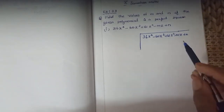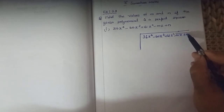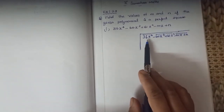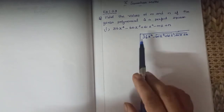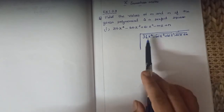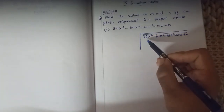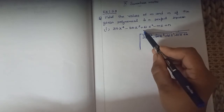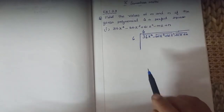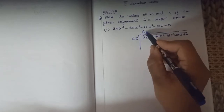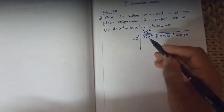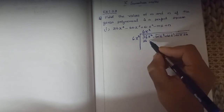For the square root, you pair up the terms — these two, these two, and this single term. Look at the first term: 36x to the power 4. Now 36 is a perfect square and x to the power 4 is also a perfect square. So 6 times 6 is 36, and x squared times x squared is x to the power 4. So the first term of the square root is 6x squared.